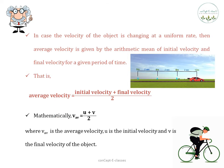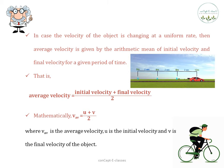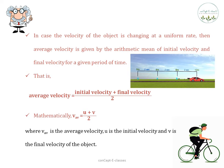Mathematically, average velocity V_av = (u + v) / 2, where V_av is the average velocity, u is the initial velocity, and v is the final velocity of the object. In the case of non-uniform motion, average velocity = total displacement ÷ total time taken, whereas in the case of uniform motion, average velocity = (initial velocity + final velocity) / 2.